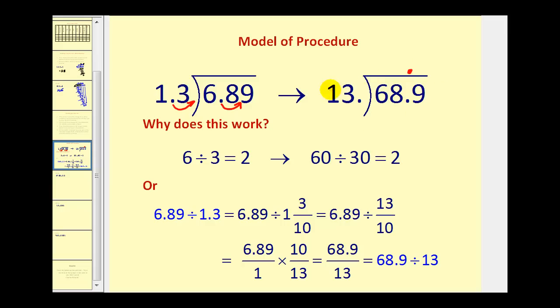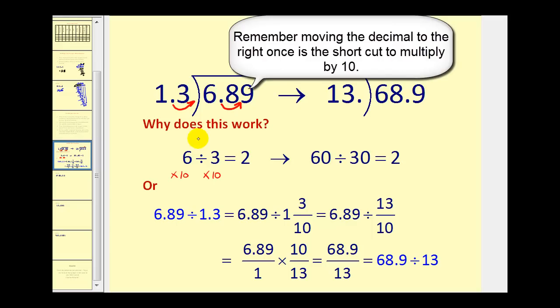Now I want to take a moment and explain why this actually works. We all know that 6 divided by 3 is equal to 2. Well, if we multiply the divisor by 10 and also the dividend by 10, we would have 60 divided by 30, and you'll notice that the quotient is still equal to 2. So as long as we multiply the divisor and the dividend by the same number, it does not affect the quotient.